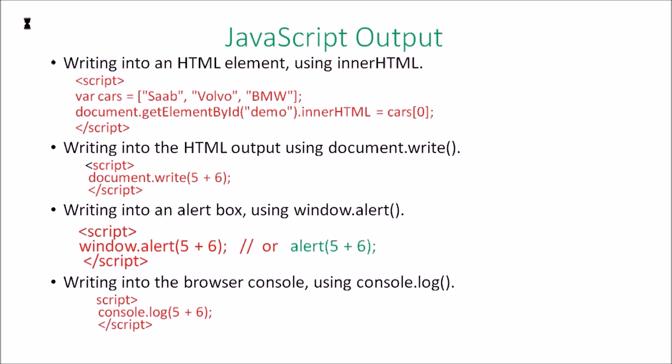AlertBox is one of the dialog boxes that helps to print output to the users. Console.log function is usually used by programmers for their debugging capabilities.